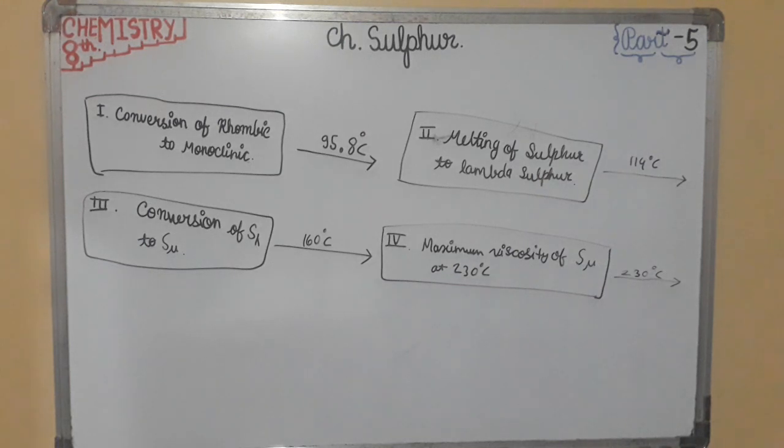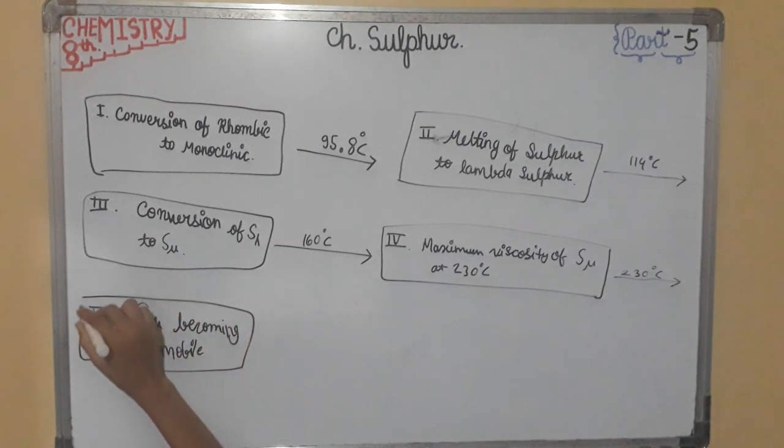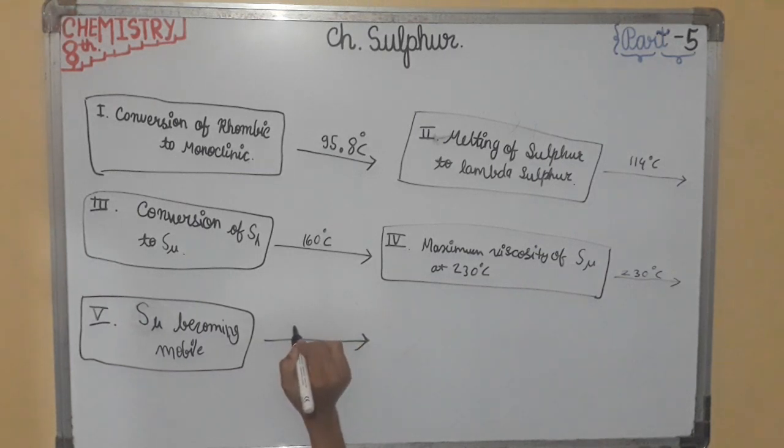Fifth is gaining mobility. Microsulphur becomes mobile at 300 degree Celsius. On further heating, the Microsulphur becomes once again mobile at 300 degree Celsius. Reason is that the S8 chains start breaking into S2 units. S2 units can move freely and make the liquid mobile.